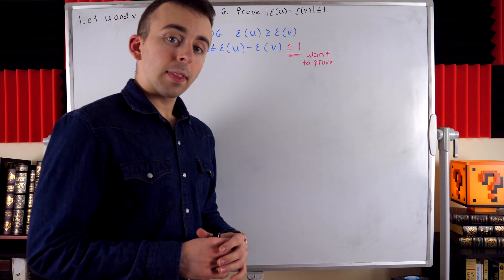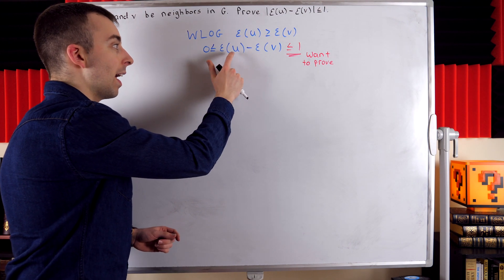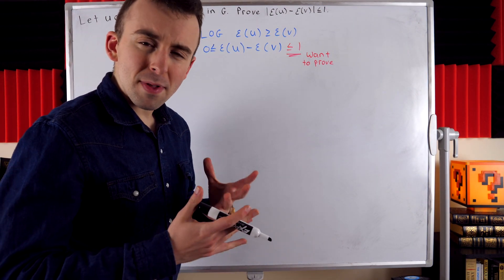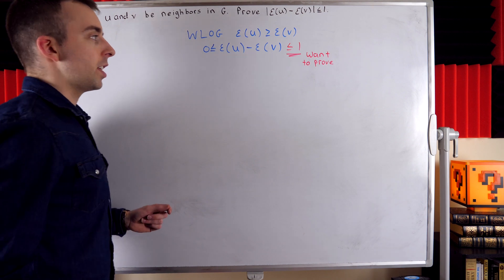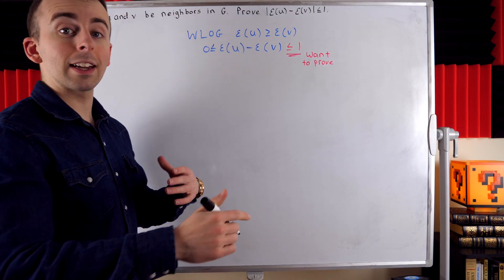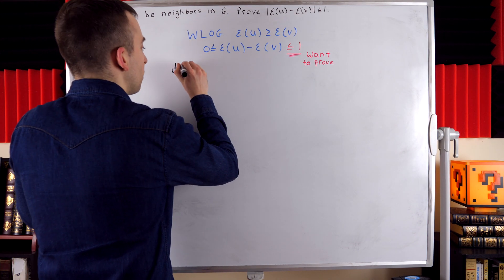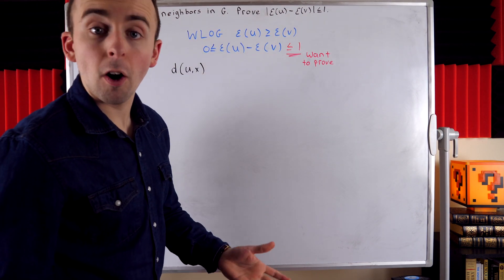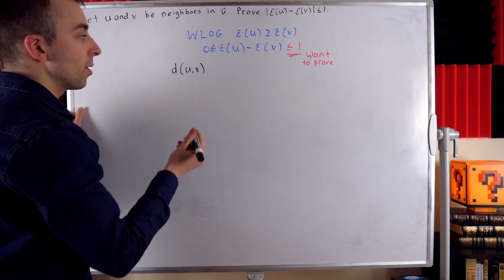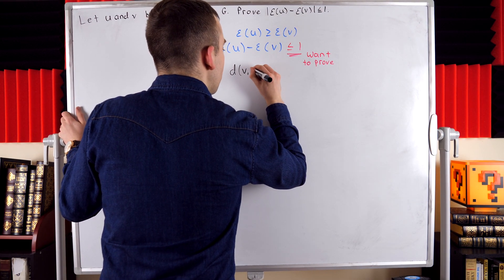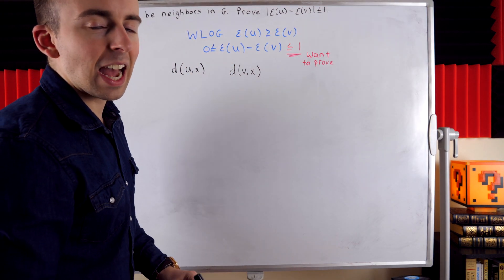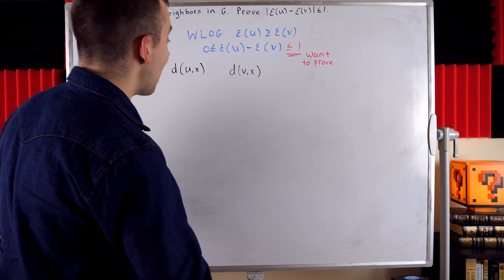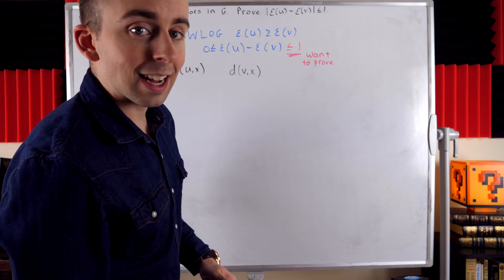What remains for us to prove is that this difference is less than or equal to 1. It will be easy to figure out how to prove that if we just start thinking simple. What's the eccentricity of u? It's the maximum distance between u and all other vertices. So maybe we just forget about the maximum for a moment and write distance between u and x, where x represents an arbitrary vertex. Similarly for the eccentricity of v, we might write distance between v and x.